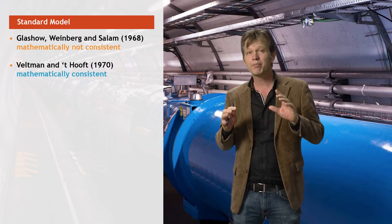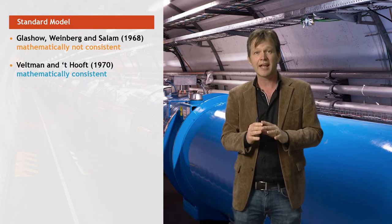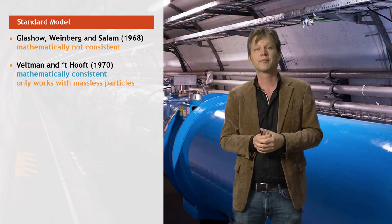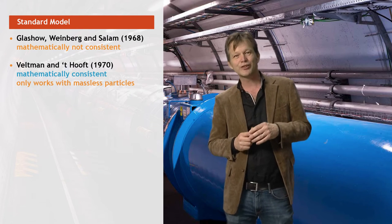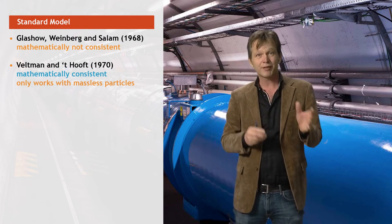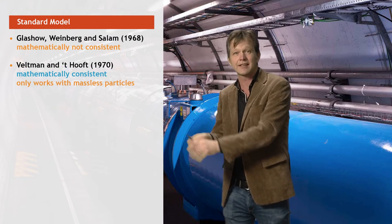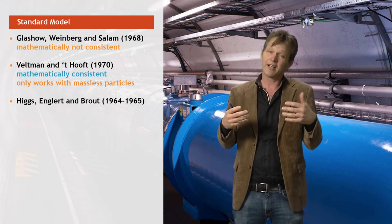However, with one major consequence, the mathematical trick only works in the case that elementary particles don't have a mass. And here, the Higgs particle enters the scene. Because the solution written down by Peter Higgs, Francois Englert, and Robert Brout, already in 1964 and 1965, is to describe the mass of particles in an alternative way.